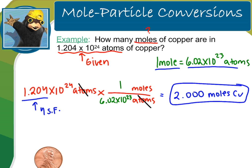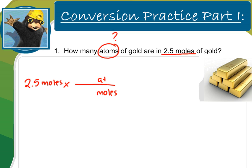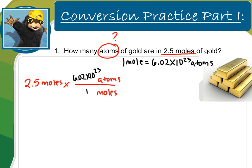Let's try another sample problem. How many atoms of gold are in 2.5 moles of gold? Again, start with your given — 2.5 moles of gold. This time I'm converting to atoms, so moles go on the bottom to cancel and atoms go on top. My conversion factor is that 1 mole equals 6.02 times 10 to the 23rd atoms, so the placement depends on what I'm trying to cancel. Since I'm canceling moles, they go on the bottom.